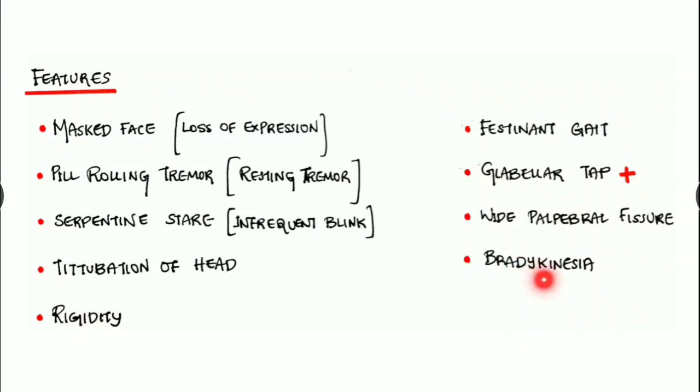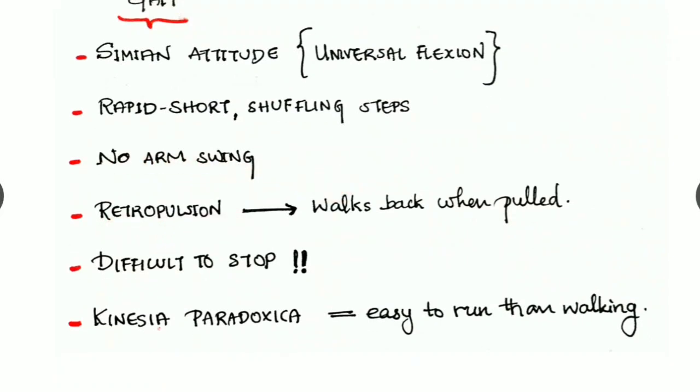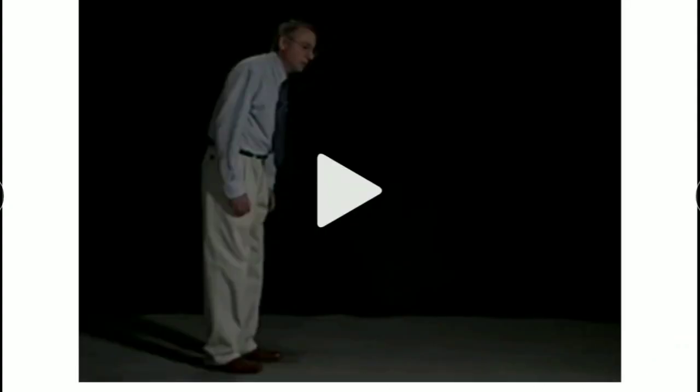Regarding the gait, the patient attains a simian attitude which is of universal flexion. The patient walks with rapid short shuffling steps without any arm swing. There is retropulsion, which means the patient walks back when pulled from behind. There is difficulty to stop the movement. Next comes the term kinesia paradoxica, which means the patient feels easier to run than walking.